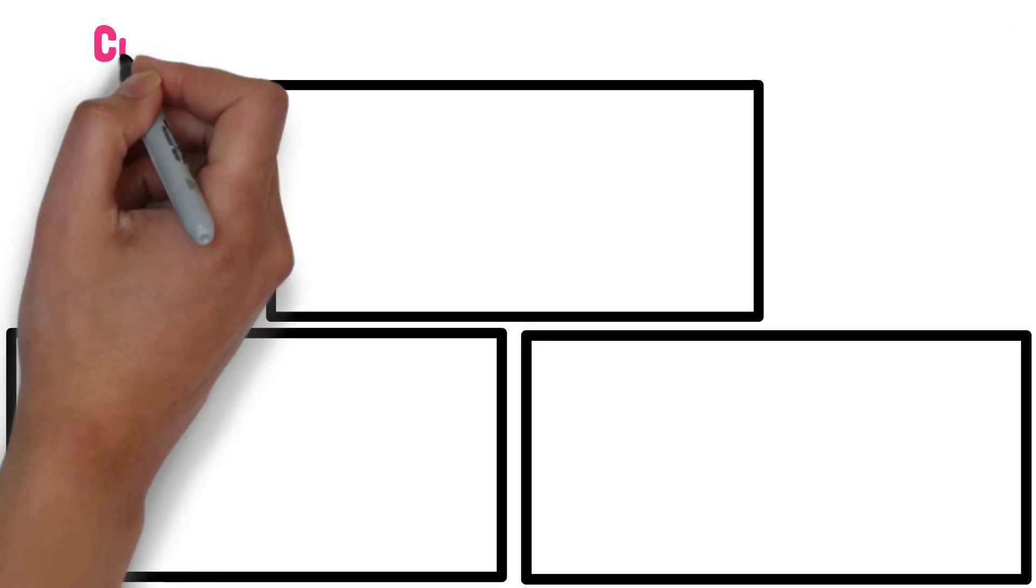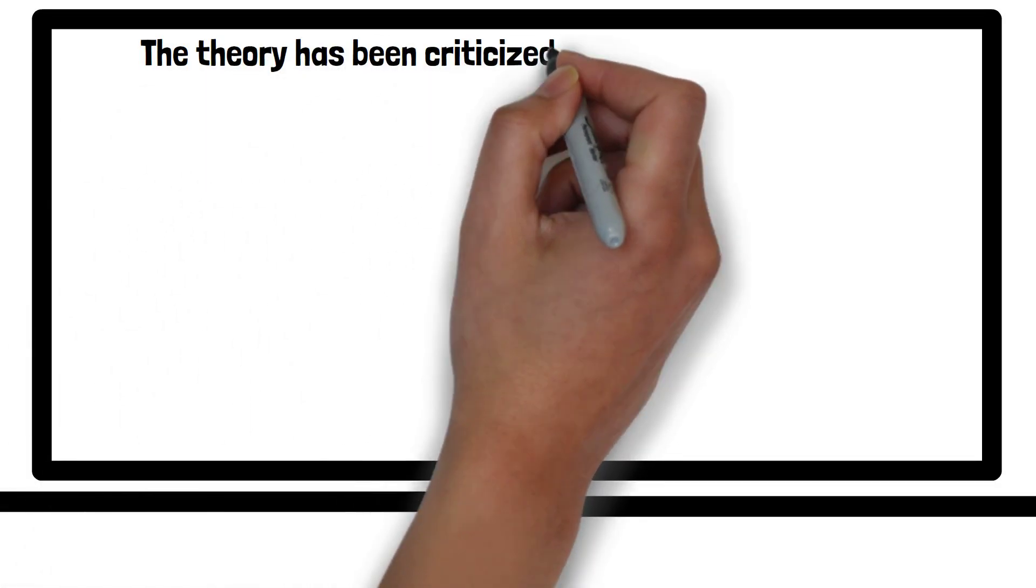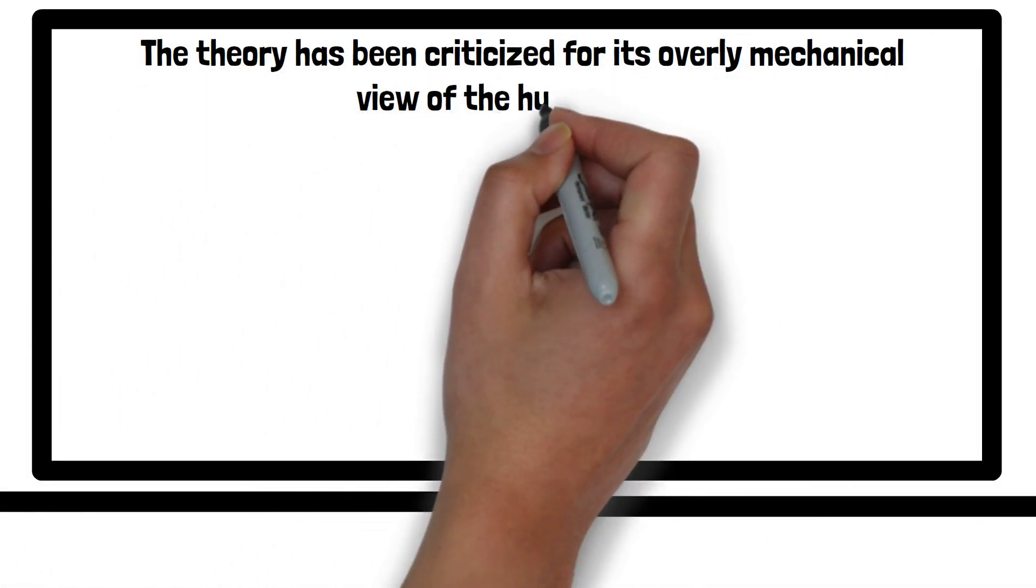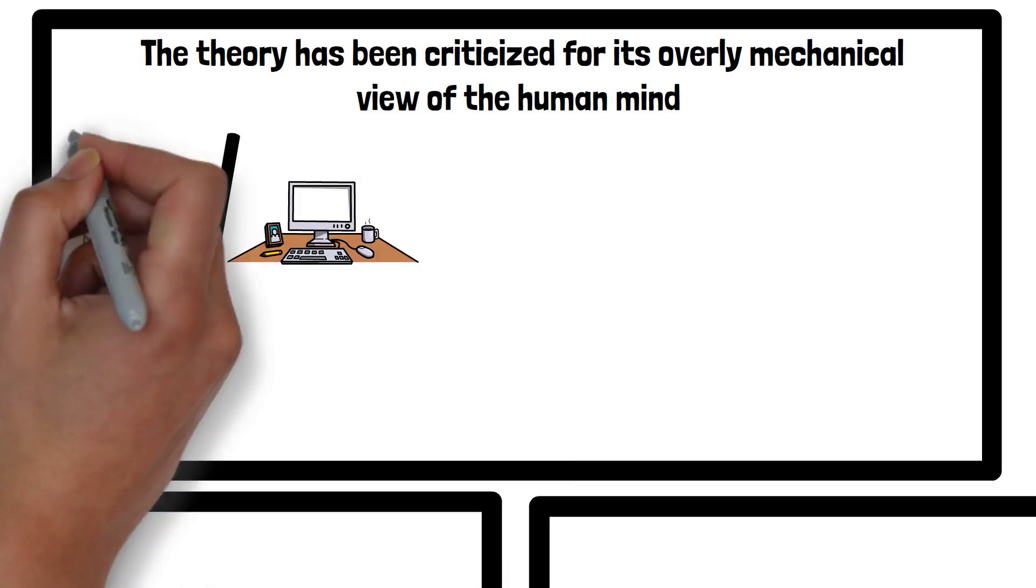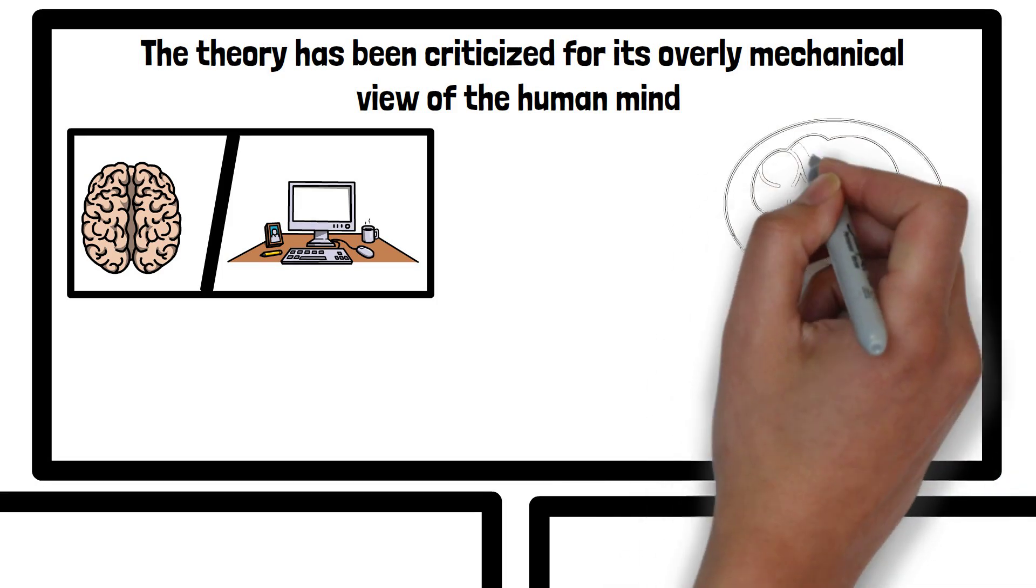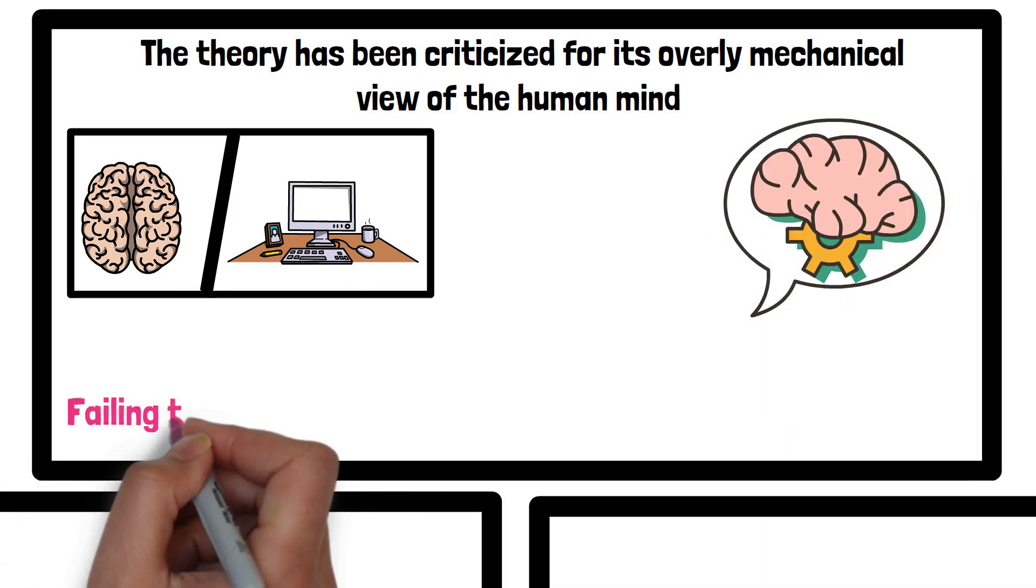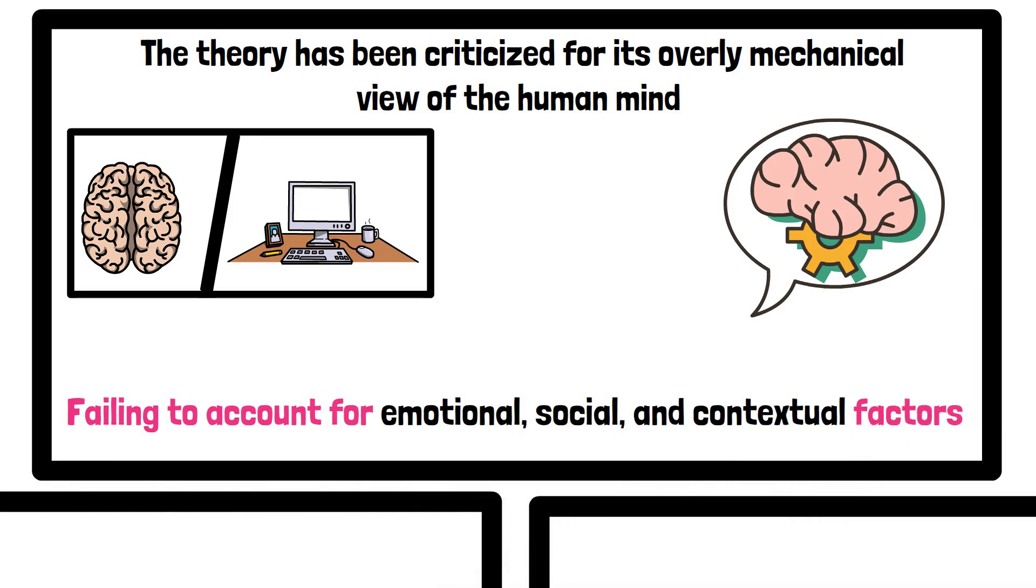Now let's explore three criticisms of information processing theory. First, the theory has been criticized for its overly mechanical view of the human mind. By comparing the mind to a computer, it may oversimplify the complex and dynamic nature of human cognition, failing to account for emotional, social, and contextual factors that influence thinking and learning.